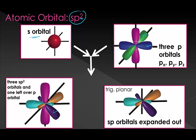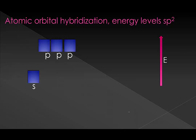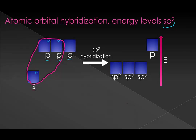Now let's look at sp2 in terms of energy levels. We draw our valence shell and circle the ones we're going to combine. We start with three orbitals, so we end with three orbitals. We used an s and two p's, so we get three sp2 orbitals. We also have a leftover p orbital — in this case just one — and so that stays where it is.